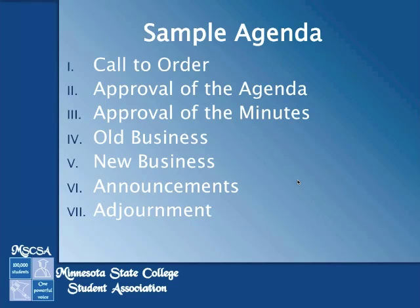The next item on the agenda should be the approval of the minutes. The minutes are the record of the previous meeting — they describe what occurred, any motions that were made, any elections that occurred, anything discussed during that meeting. For Senates especially, these minutes serve as an official record of purchases or decisions to use funds, so it's crucial that the minutes are kept descriptive. The next item would be any old business: items discussed at the last meeting where a decision wasn't made or more research had to be done, which you would bring up first before moving to anything new.